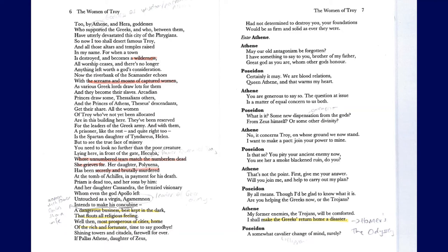Athena says: 'May old antagonism be forgotten. I have something to say to you, brother of my father, great god as you are, whom other gods honor.' Poseidon replies: 'Certainly — we are blood relations, Queen Athena, and that warms my heart.' Athena: 'You are generous to say so. The question at issue is a matter of equal concern to both of us.' Poseidon: 'What is it — some new dispensation from Zeus himself or some other divinity?' Athena: 'No, it concerns Troy, on whose ground we now stand. I want to make a pact — to join your power to mine.' This war has been fought between the Greek army and Troy, and we see these two gods on either side, but Athena presents the opportunity for a pact between them.